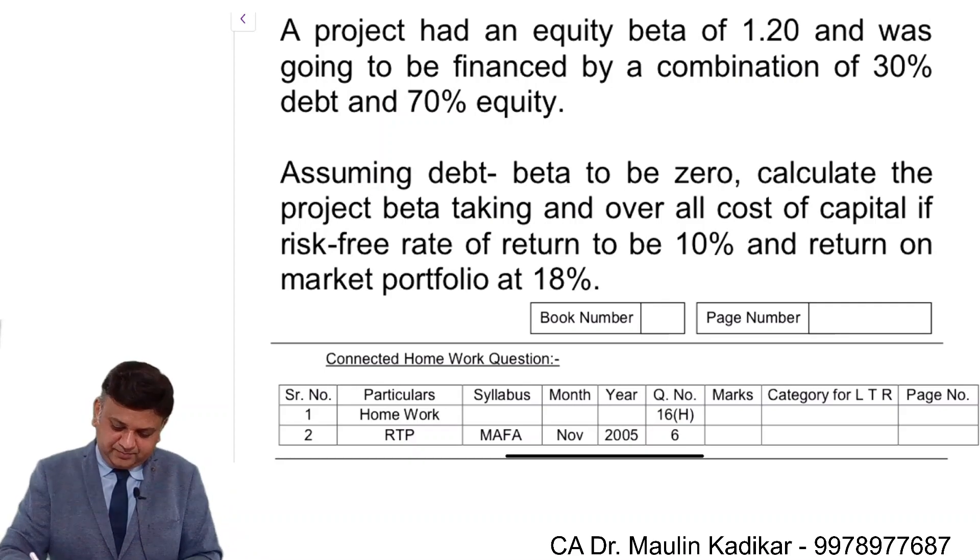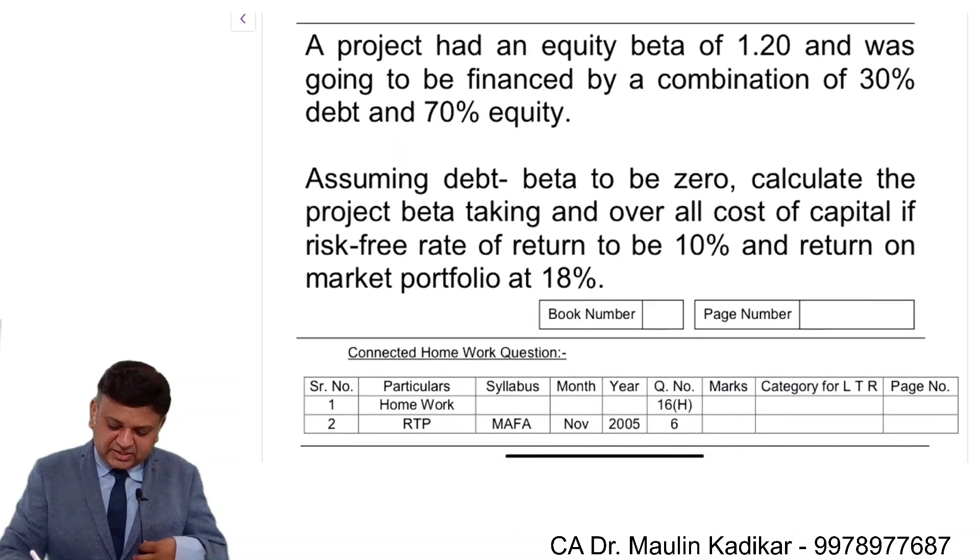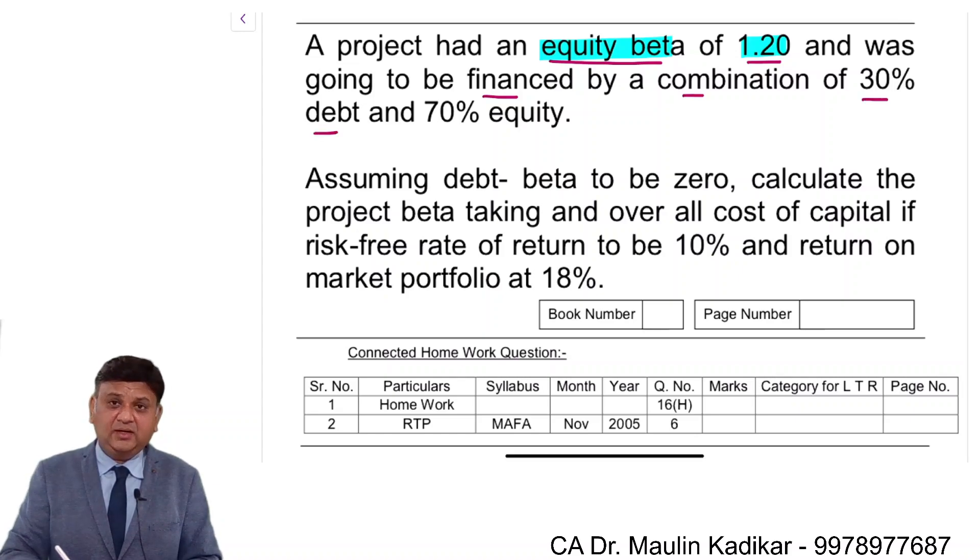Let us see the next question. A project had an equity beta of 1.20 and was going to be financed by a combination of 30% debt and 70% equity.